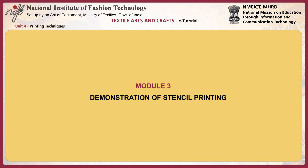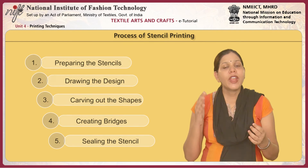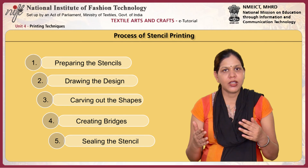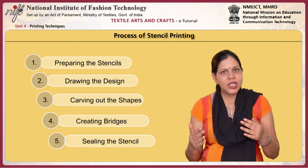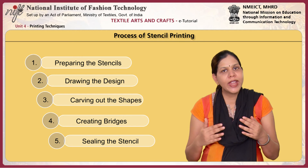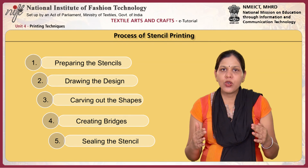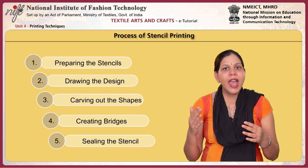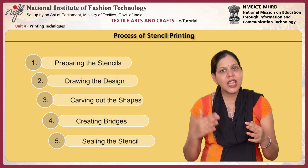Now that you have learnt the process of block printing, the final module will give you an overview of the stencil printing technique. There are 5 steps in the process of stencil printing: preparing the stencils, drawing the design, carving out the shapes, creating bridges, and sealing the stencil.